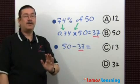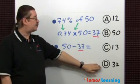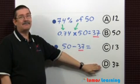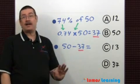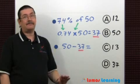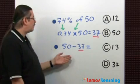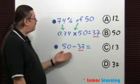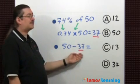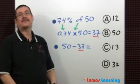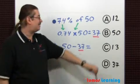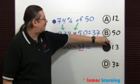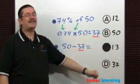But be careful — don't select choice D. We want the number of questions she did not answer correctly. So perform the subtraction of 50 minus 37. The answer is choice C: 13.